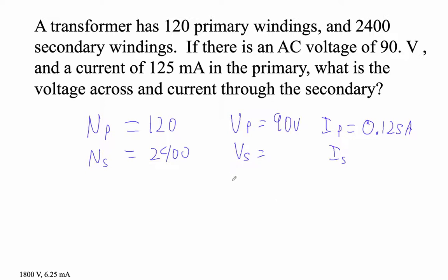So the windings are directly proportional to the voltage, so let's do that first. NP is 120. So we're going to go NP over NS is VP over VS. So let's see, 120 over 2400 is equal to 90 over VS.